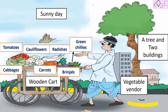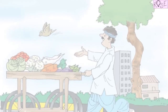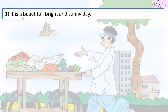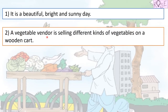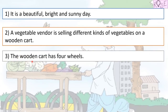This vegetable vendor looks so happy and these vegetables look so tasty and fresh. Now let us write some sentences regarding all these. Are you ready? Let us start writing. It is a beautiful, bright and sunny day. A vegetable vendor is selling different kinds of vegetables on a wooden cart. The wooden cart has four wheels.